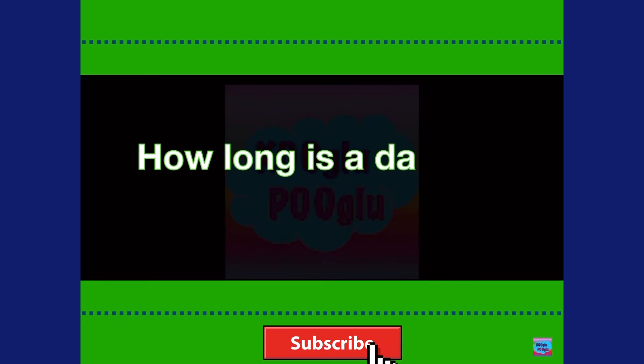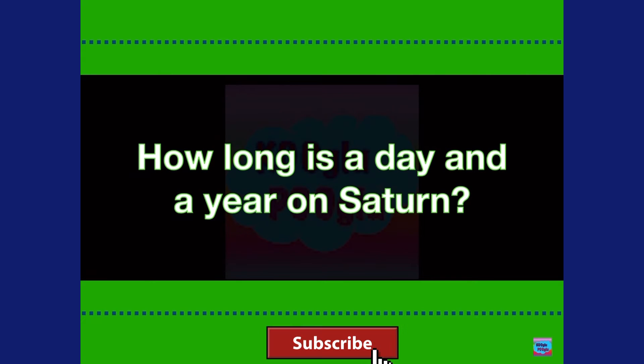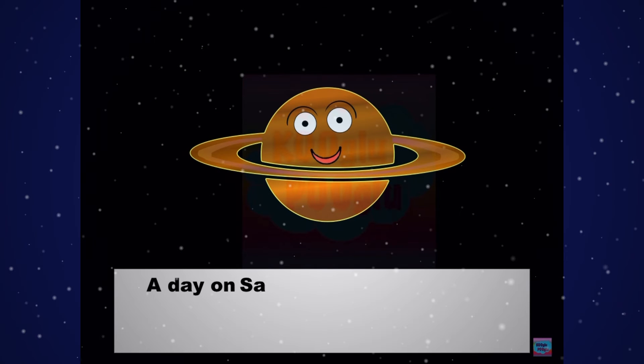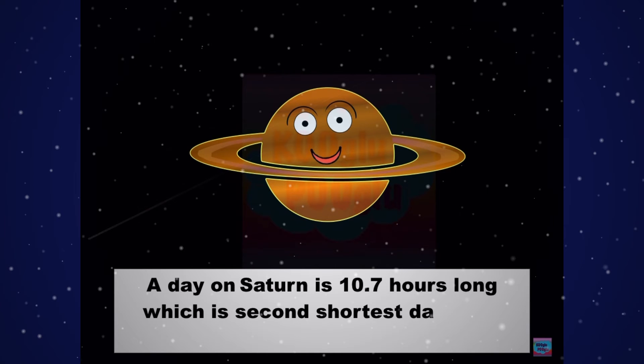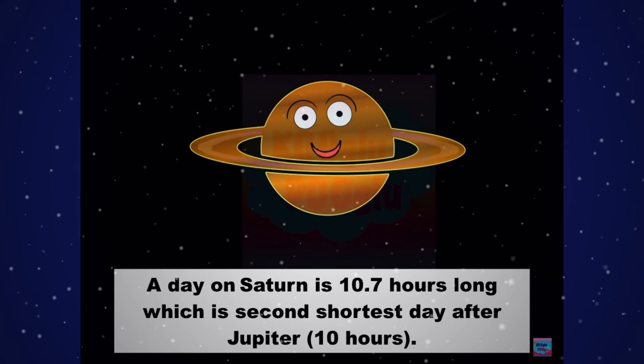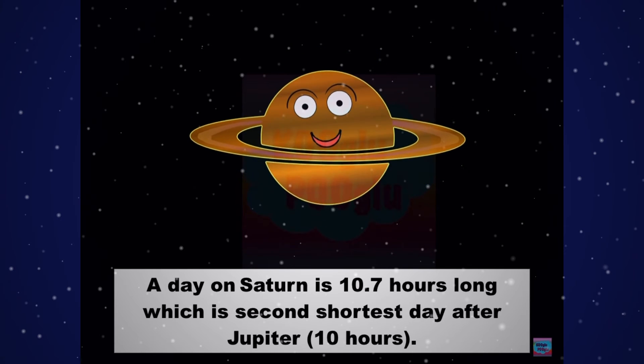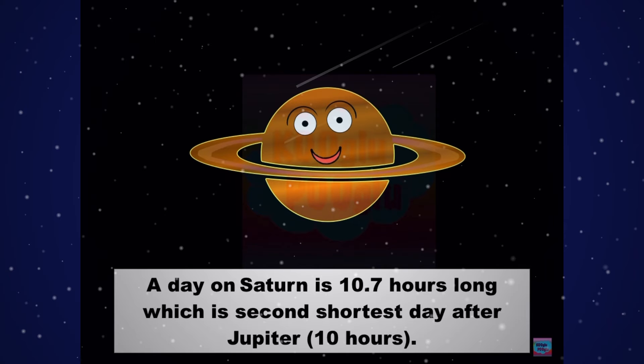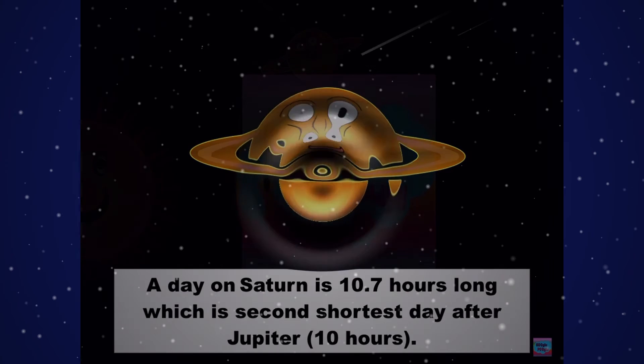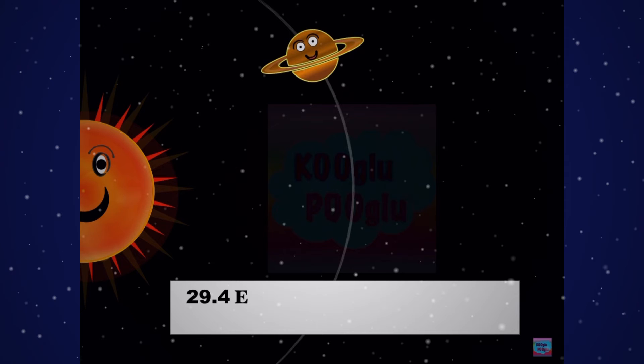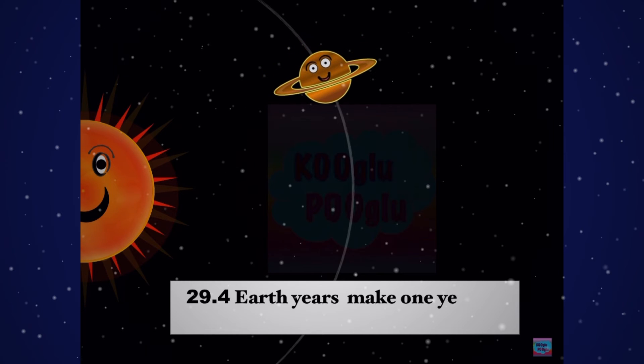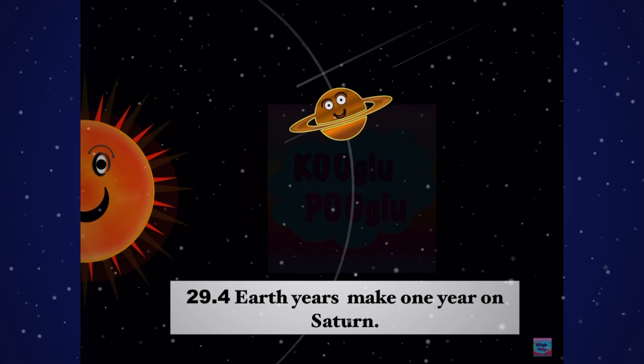How long is a day and a year on Saturn? A day on Saturn is 10.7 hours long, which is the second shortest day after Jupiter, which is 10 hours. It takes around 29.4 Earth years to make one year on Saturn.